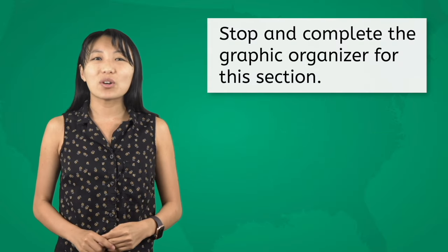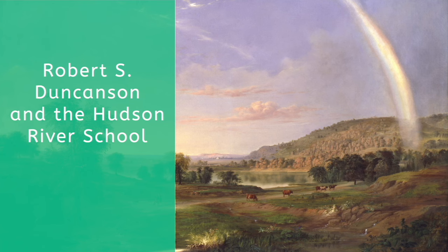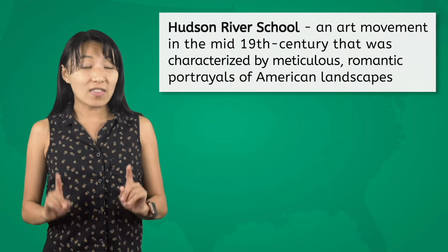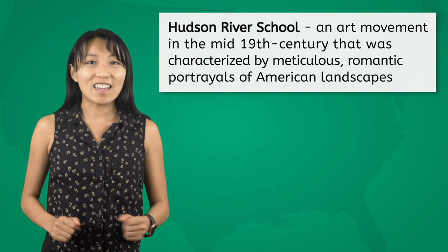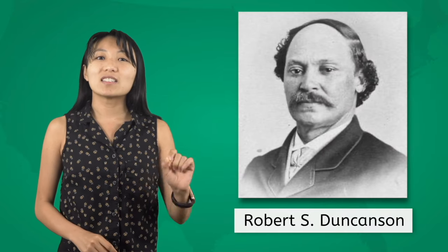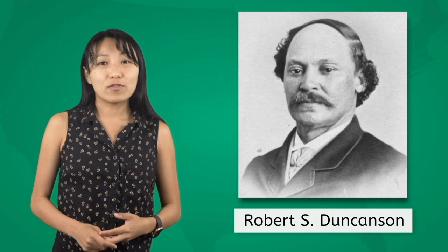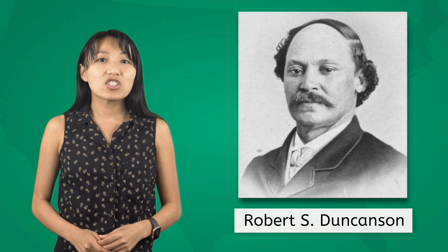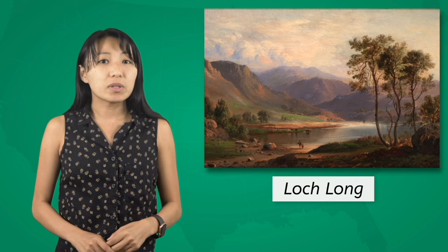Let's stop and complete our graphic organizer for this section. Next we're going to focus on an American artist who belonged to a movement known as the Hudson River School — an art movement in the mid-19th century characterized by meticulous, romantic portrayals of American landscapes, particularly of the Hudson River Valley and surrounding areas. The artist was Robert S. Duncanson, who was born in 1821 to a family of free black Americans in New York. Duncanson initially began as a house painter, but eventually taught himself more advanced techniques.